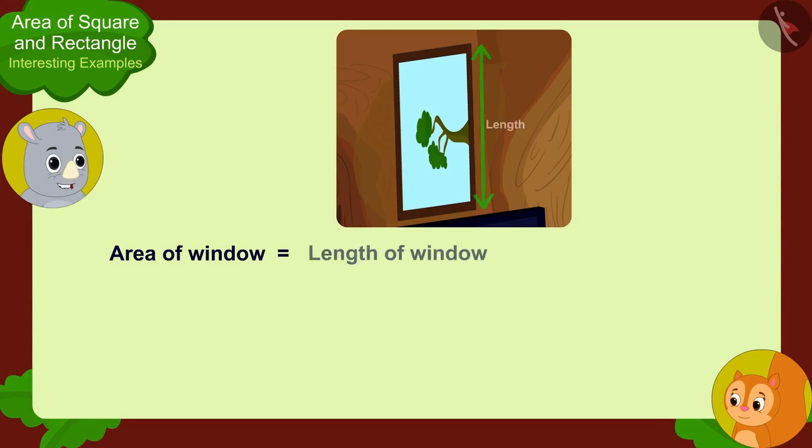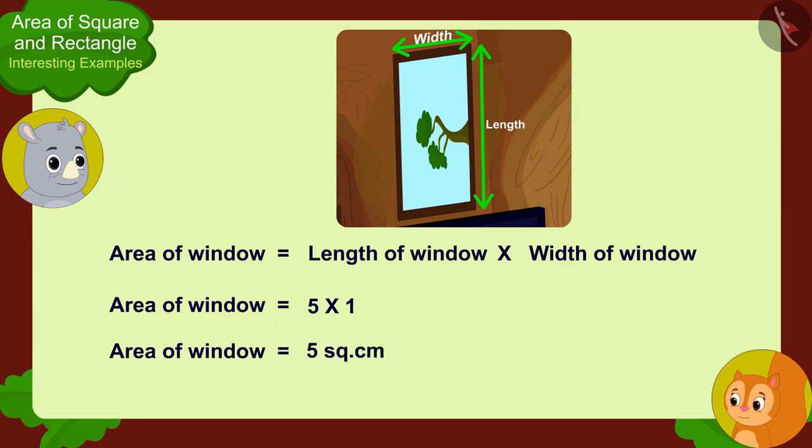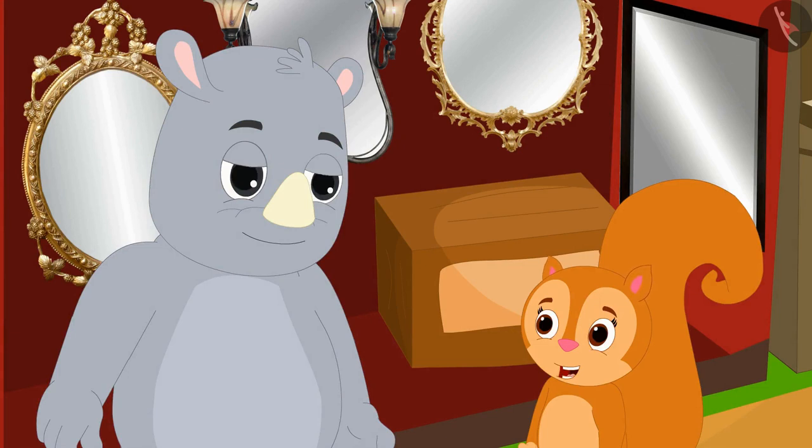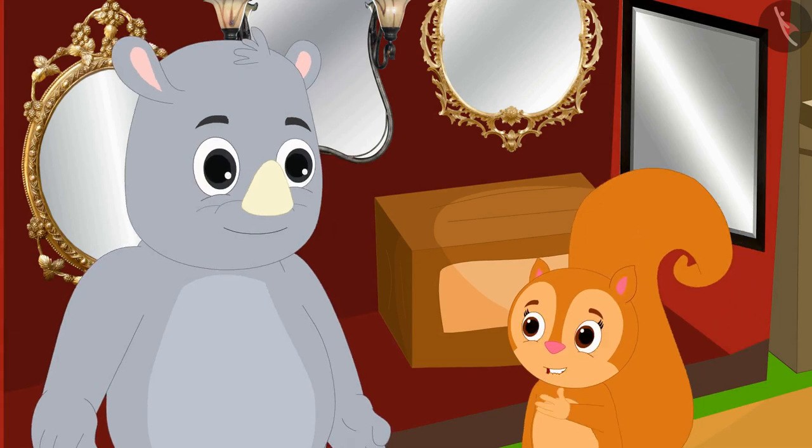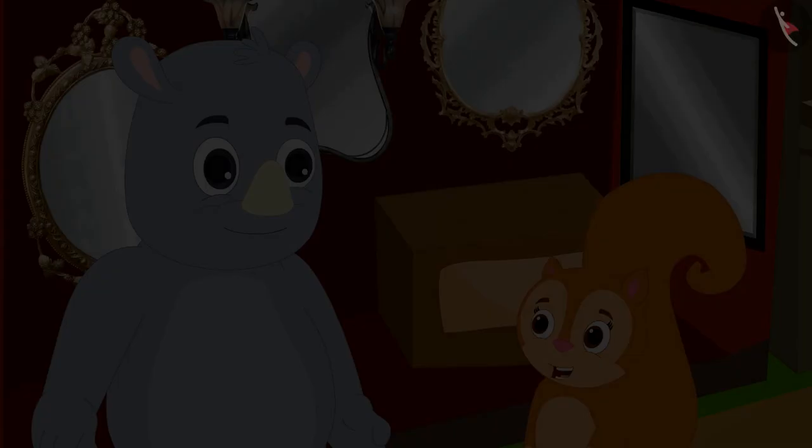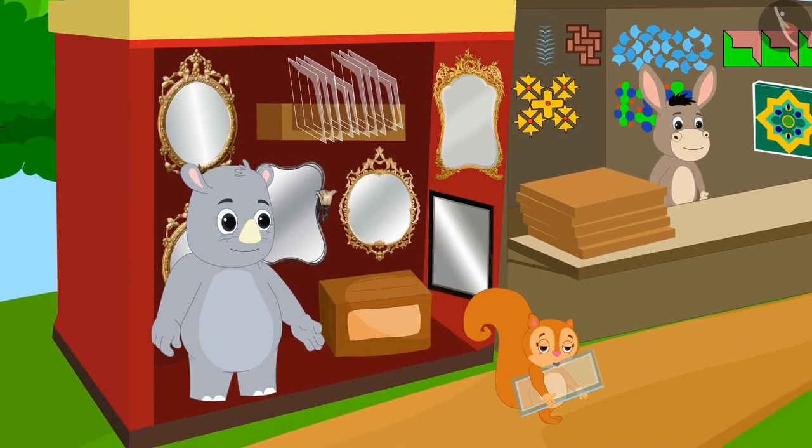Now because your window is rectangle shaped, we only have to multiply the length of the window by the width of the window to find the area of the glass in your window pane. In this way, the area of your glass will be five times one, five square meters. Chanda thanked Gaggoo and happily returned home after purchasing her glass from his shop.